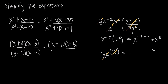Finally, the last denominator, x squared plus 9x plus 14, factors as x plus 7 times x plus 2, because 7 times 2 is positive 14 and 7 plus 2 is 9. So we were able to factor both the numerator and denominator of both fractions. Now let's see what we can cancel.